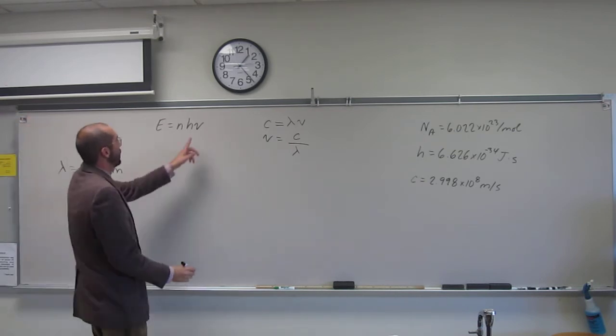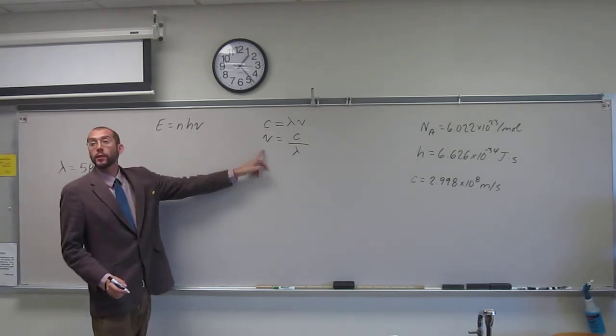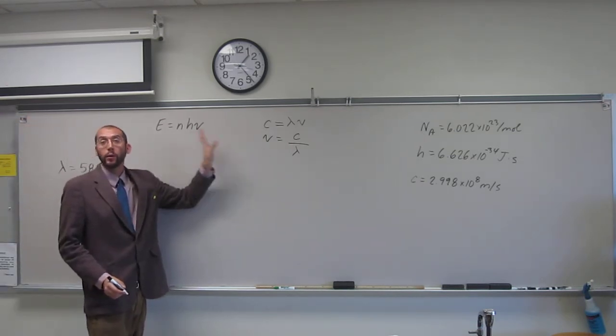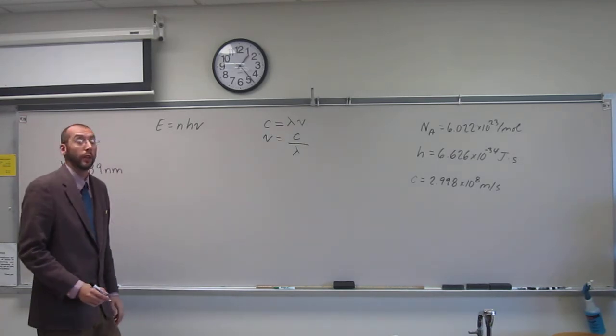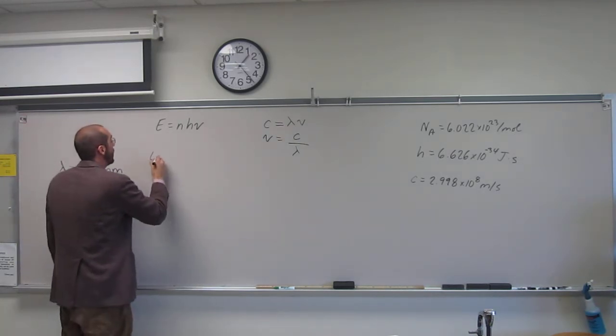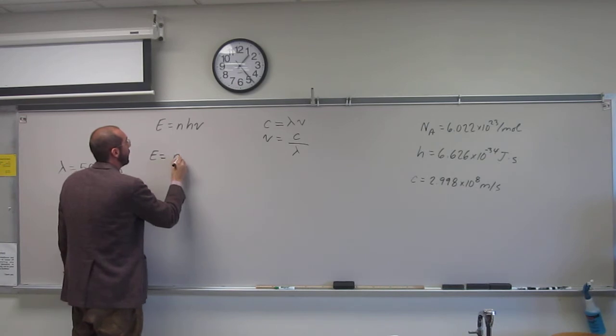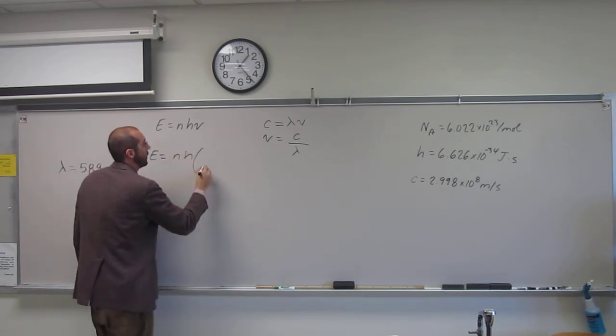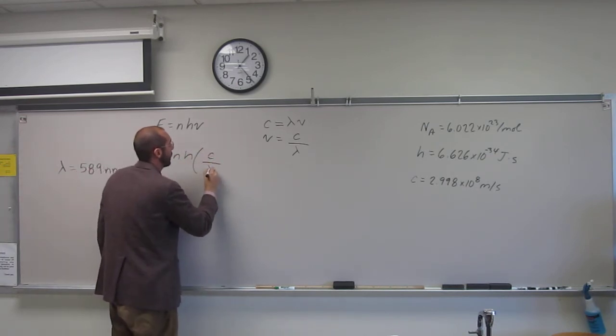So now, frequency there and frequency there are the same thing, so what we're going to do is plug one in for the other. So E now equals nh times c over lambda.